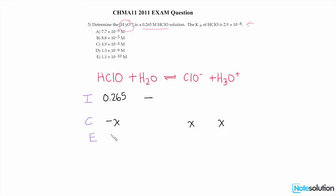...then on the product side we get x amount of products being produced. And so we end up with 0.265 minus x, x, and x. Now we're told that the Ka is equal to 2.9 times 10 to the power of negative 8. And loosely speaking, this is equal to the concentrations of the products divided by the concentration of the reactants.